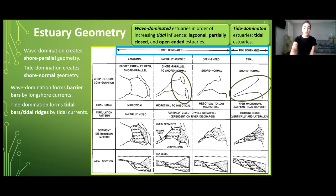Then we have the formation of bars. Wave dominated systems form barrier bars by longshore currents, distinguishing wave dominated systems with that shore parallel geometry, and then we have tide dominated systems which form tidal bars and tidal ridges caused by tidal currents which are normal or perpendicular to the shore.